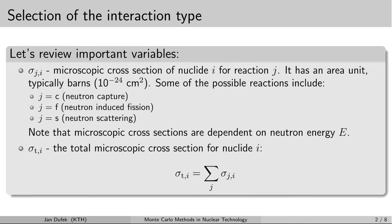Let's assume that we are simulating the neutron transport in some material which is composed of a variety of different nuclides. In order to sample the reaction type we have to decide first what kind of nuclide the neutron collides on. To select the nuclide and eventually the type of reaction, we need to know the probabilities for different reactions, and for this we have to work with cross-sections.